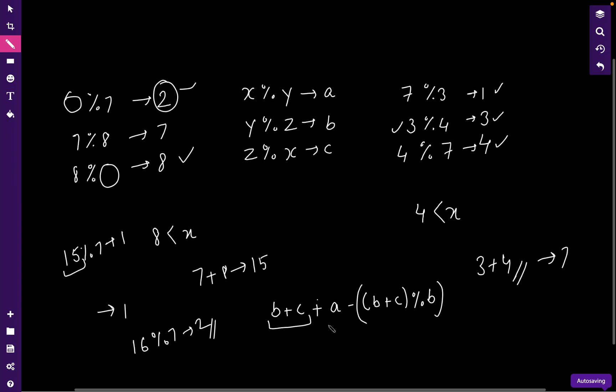So this is what this formula means. This is the A required, and the remainder that we got here is (B plus C) percent B. So this is what our x will be.